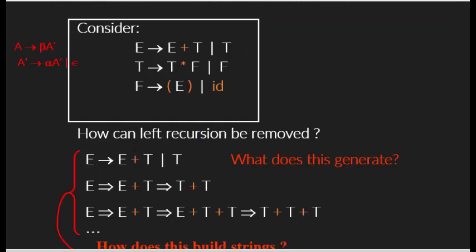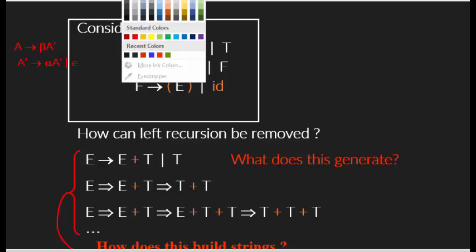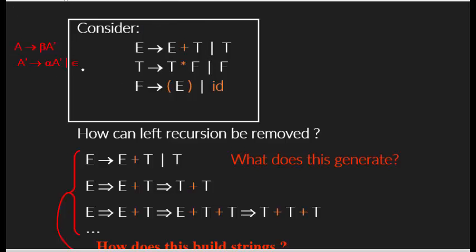Let's look at an example. E goes to E plus T — E is the leftmost symbol, so this is left recursive grammar and we need to remove that ambiguity. The rule is shown beside us, which makes it easier for beginners to classify which part is alpha and which is beta.